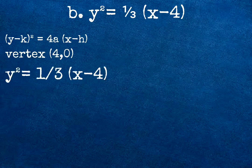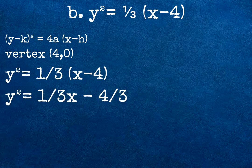Again, to get the general form, we are going to multiply 1 third to quantity x minus 4. It will become y squared equals 1 over 3x minus 4 over 3.